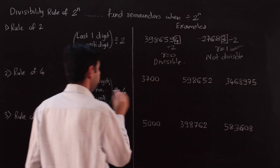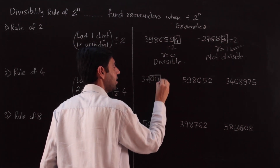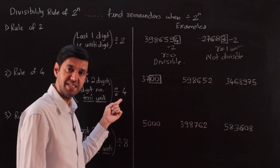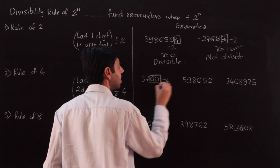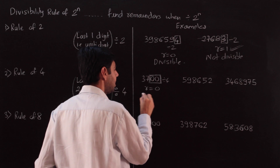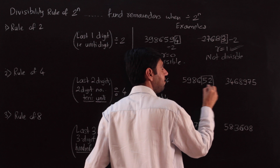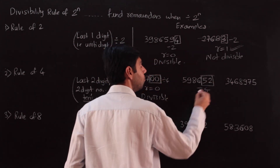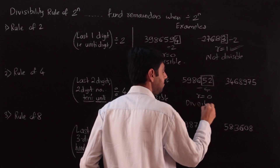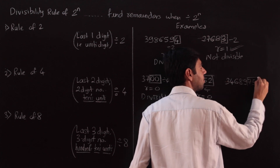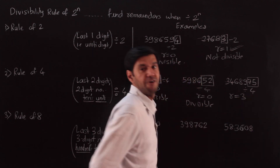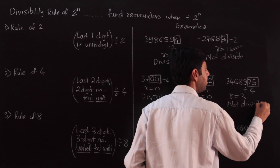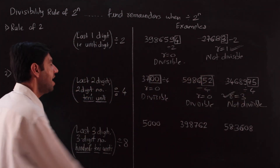Let's apply this to rule of 4 with examples. Last two digits: if the last two digits are 00, is it divisible by 4? Yes — zero is divisible by every natural number, so the remainder is 0. To find the remainder when a big number is divided by 4, focus only on the last two digits. For example, 52 divided by 4: 4 thirteens are 52, remainder is 0, so the number is divisible. For 75 divided by 4: 4 eighteens are 72, remainder is 3 — the number is not divisible, and we know the remainder is 3.